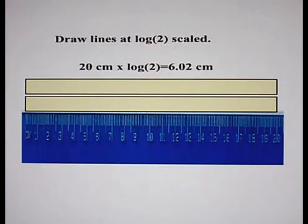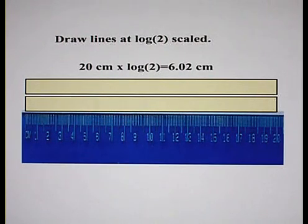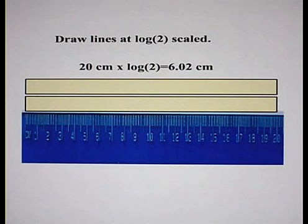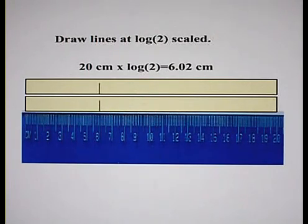Since 20 centimeters represents the log of 10, then 20 times 0.301 — the log of 2 — gives us 6.02 centimeters for the number 2.